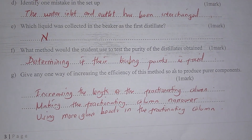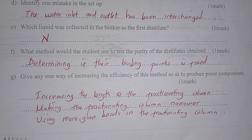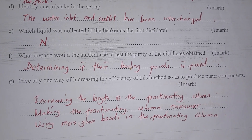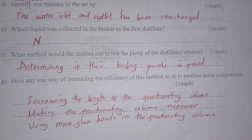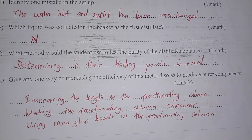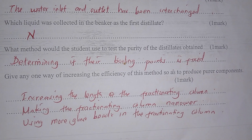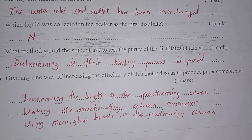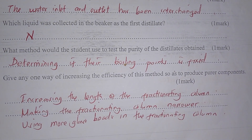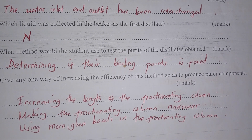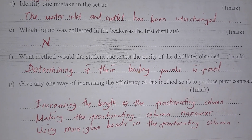What method would the student use to test purity of the distillate? They would determine the boiling point of the distillate. To increase the efficiency of this method to produce a purer compound, you increase the length of the fractionating column, make the fractionating column narrower, or use more glass beads in the fractionating column.